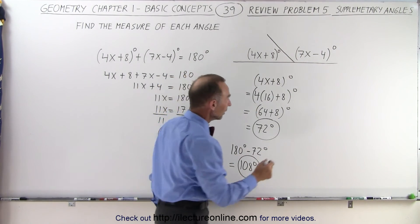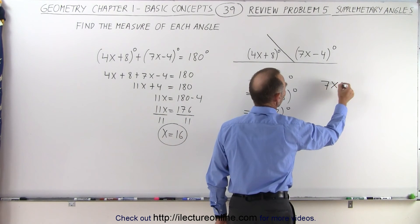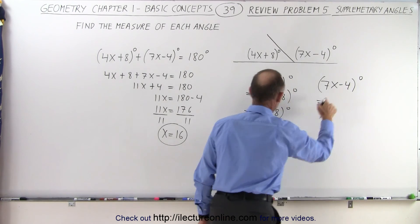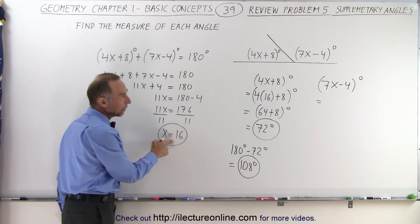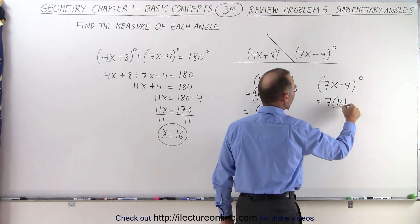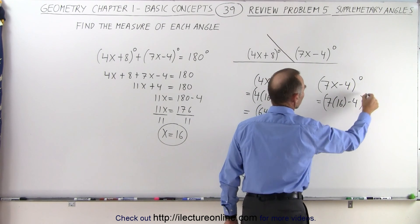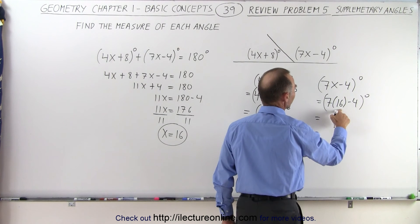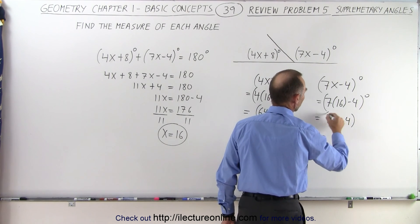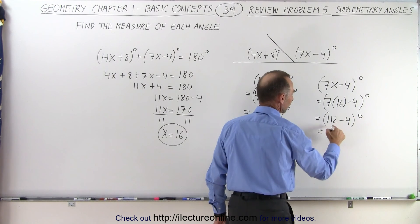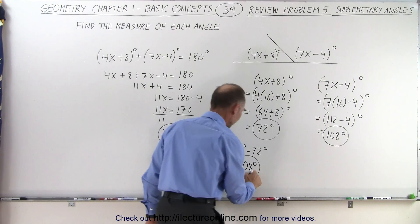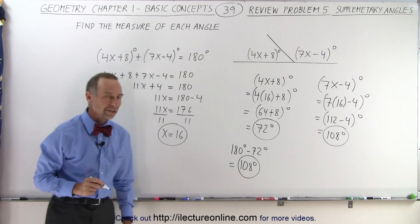So let's do that. We say that 7x minus 4 degrees, when we replace x by 16, we can write 7 times 16 minus 4 degrees. So 7 times 16 is 112 minus 4 degrees and subtracting 4 from 112 is 108 degrees and we get the exact same result.